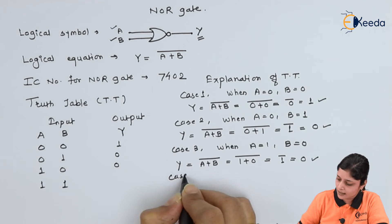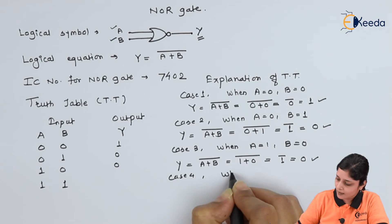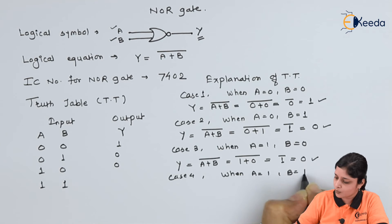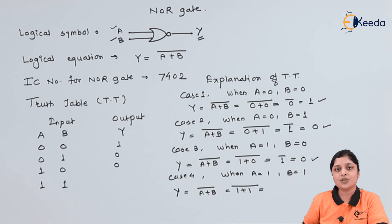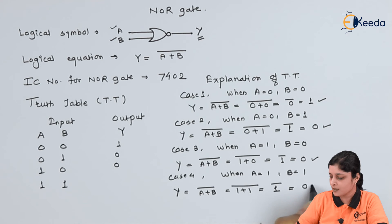Then case 4, when A equals to 1, B equals to 1, you will get Y equals to A plus B bar, that is 1 plus 1 bar. Addition of logical 1 with the logical 1 will always give you logic 1. So complement of the 1 is always 0.